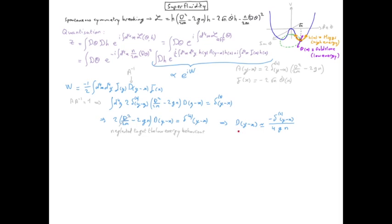Subbing the expression for the propagator into the expression for W and also using the expression for J, we then get our path integral as a function of theta only. This gives our expression for the effective Lagrangian.